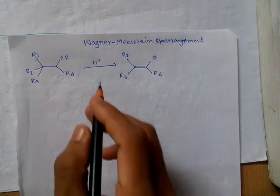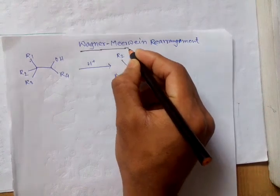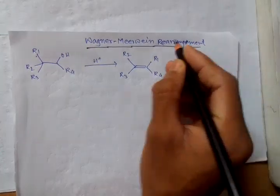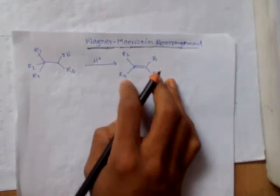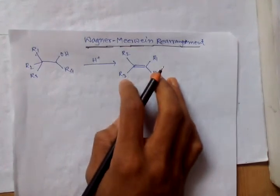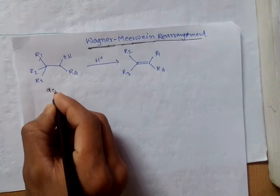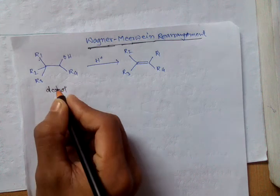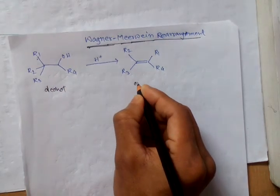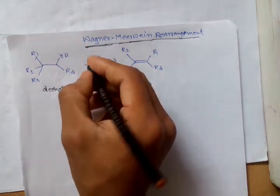Hello friends, today I am going to discuss the topic Wagner-Meerwein Rearrangement. It is an organic reaction used to convert an alcohol to an olefin using an acid catalyst.